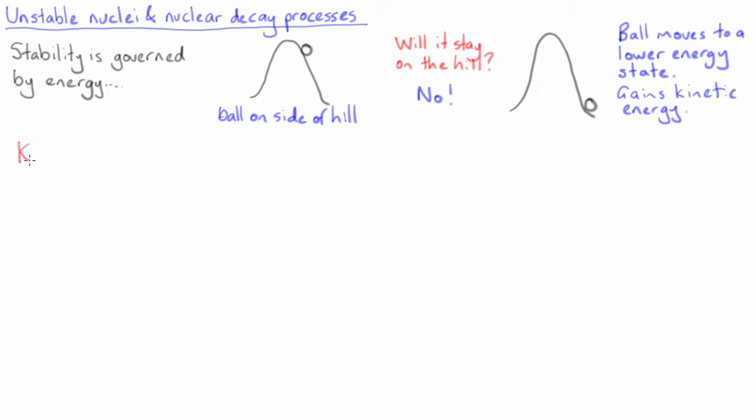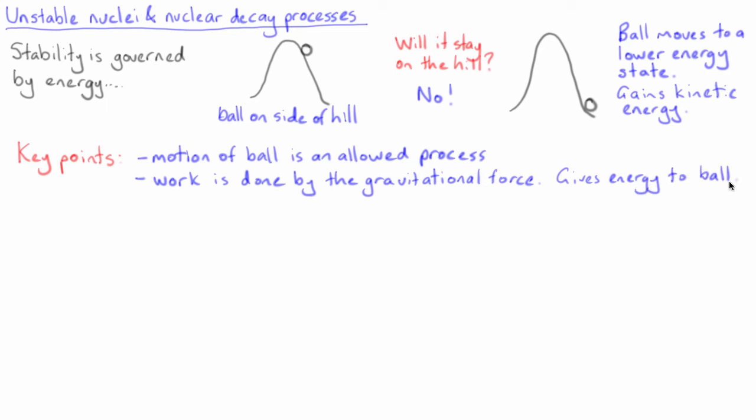There are two important points regarding this situation. First, the motion of the ball is an allowed process since gravity can pull the ball down the hill. Second, the kinetic energy given to the ball is a result of the work done by this gravitational force.